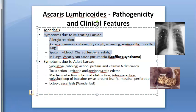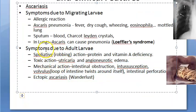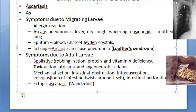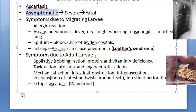Moving to symptoms due to the adult worm: clinical manifestations vary from asymptomatic infection to severe infection to even fatal consequences. Asymptomatic infection is generally seen in mildly infected cases.